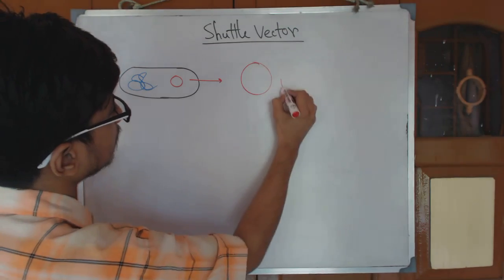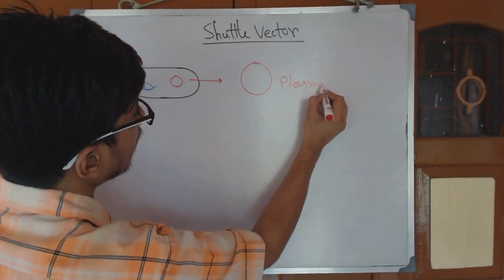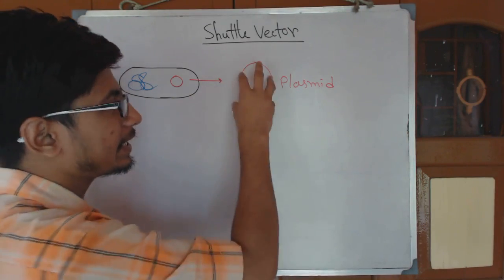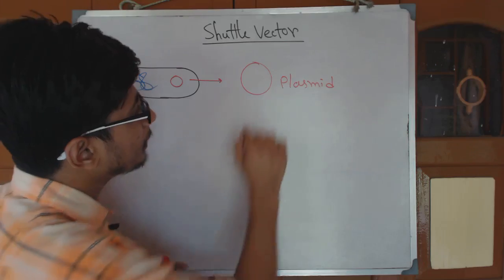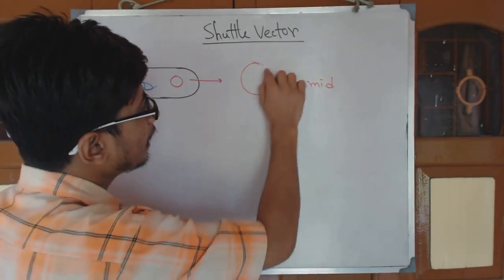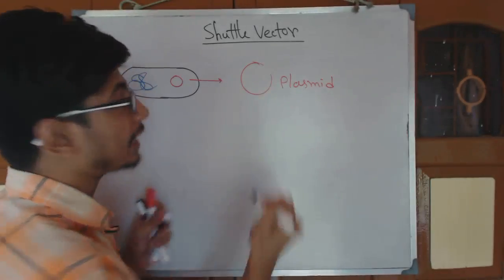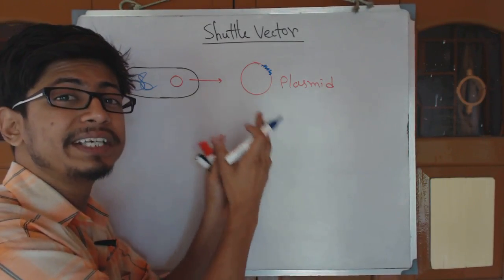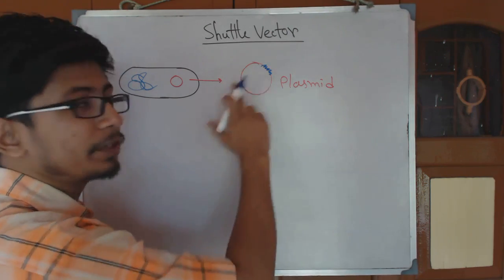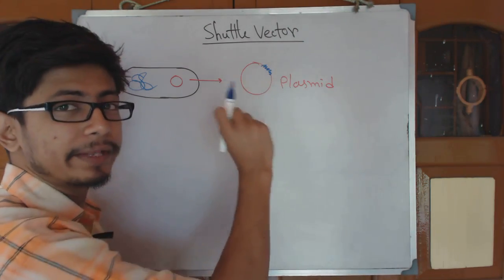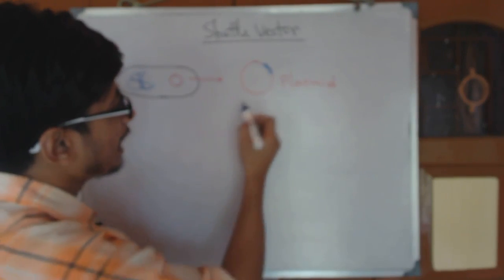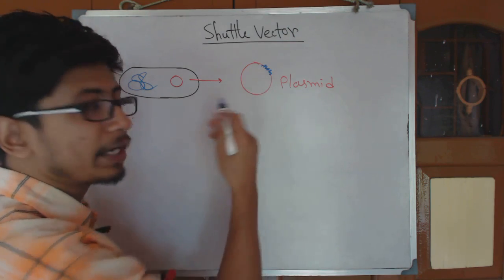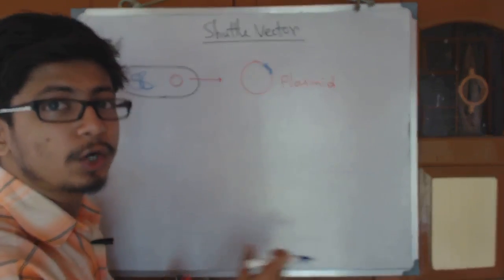Now what we can do is take this plasmid out and redesign it in such a way that we can treat it as a carrying vehicle where we cut a small portion of it and then attach our target gene with this. That can act as a recombinant DNA molecule because two different sets of DNA are recombined together, reattached together and then we take this recombinant vector inside the host cell.